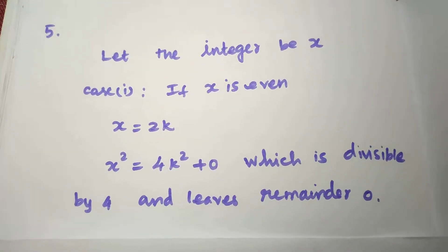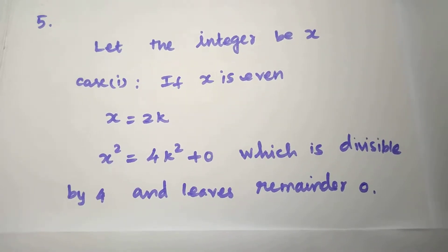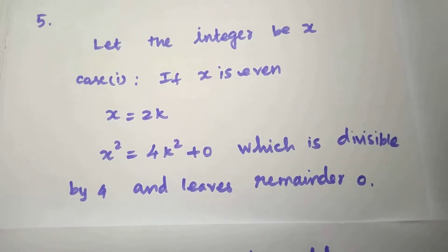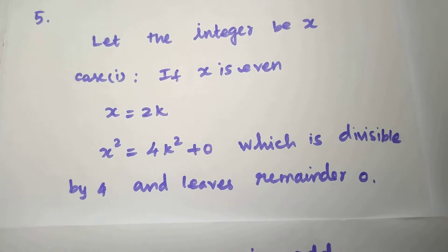Let the integer be x. Case 1: x is either an even integer or an odd number. If x is even, then x = 2k in general form. So x = 2k.